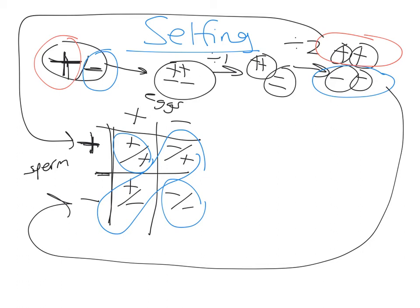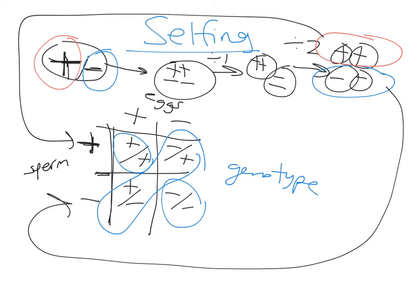You get a 1:2:1 genotype ratio. If plus is dominant to minus — though we'd have to do the cross to verify — then any individual with a plus allele has one phenotype, and the lower-right homozygous minus individual has the other phenotype, giving the familiar 3:1 phenotype ratio.